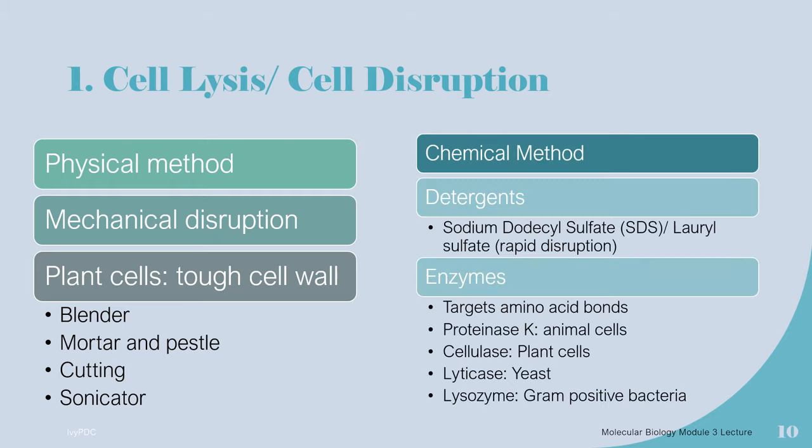The second method is the chemical method, which uses either detergents or enzymes. An example of a detergent is SDS, also known as lauryl sulfate, which is a detergent useful for the rapid disruption of biological membranes. Enzymes increase the efficiency of DNA recovery during the extraction procedure. Enzymes work better than other chemicals because they directly target the bonds of the amino acids to digest the protein.